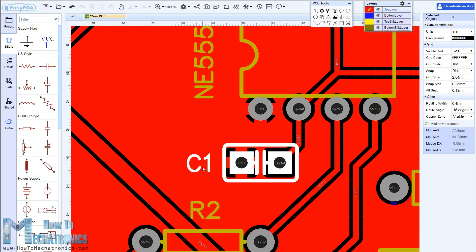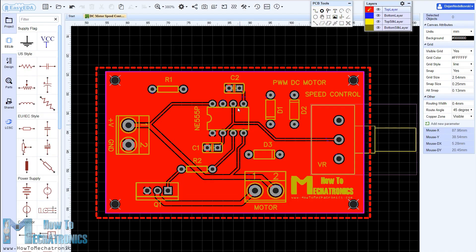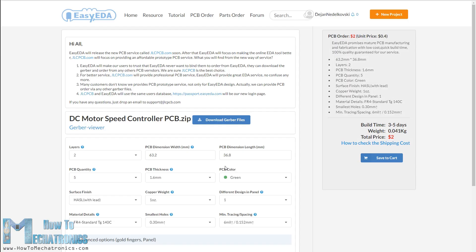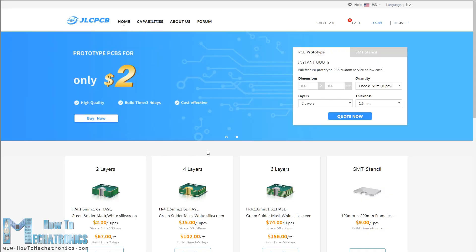Once we are done with the design we just need to click the Gerber output button, save the project, and we will be able to download the Gerber files which are used for manufacturing the PCB. We can order the PCB from JLCPCB, which are the PCB fabrication service of EasyEDA and also the sponsor of this video.